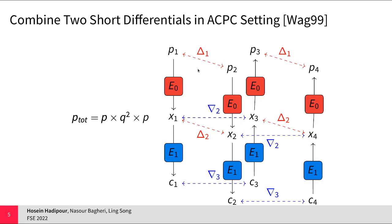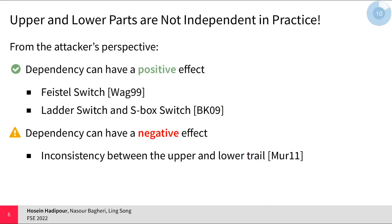If the differential transitions in the upper part are independent of those in the lower part, the probability of observing delta1 on the other side is the product of the probabilities of these four differential transitions, which equals p squared times q squared. However, in practice the upper differential transition is not independent of the lower differential transition. This dependency can have either a positive or negative effect on the resulting boomerang distinguisher. For example, the Feistel switch, ladder switch, and spike switch are dependencies that have a positive effect, allowing the attacker to derive a boomerang distinguisher with higher probability.